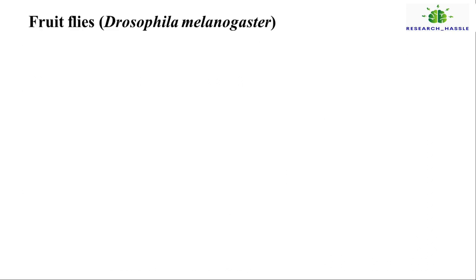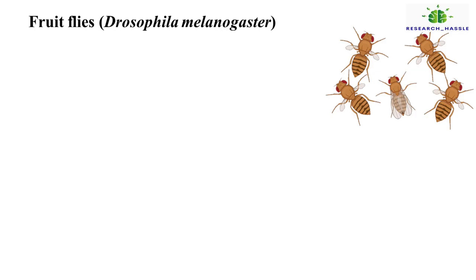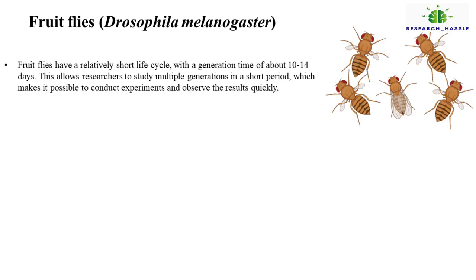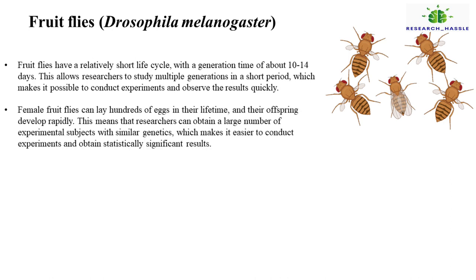Fifth, fruit flies or Drosophila. Fruit flies have a relatively short life cycle, with a generation time of about 10 to 14 days. This allows researchers to study multiple generations in a short period, which makes it possible to conduct experiments and observe the results quickly. Female fruit flies can lay hundreds of eggs in their lifetime and their offspring develop rapidly. This means that researchers can obtain a large number of experimental subjects with similar genetics, which makes it easier to conduct experiments and obtain statistically significant results.